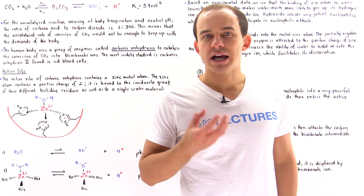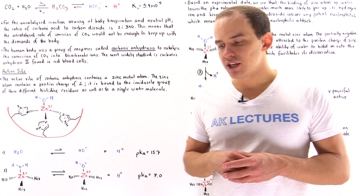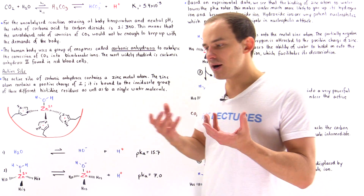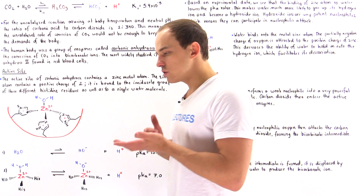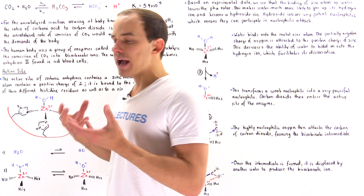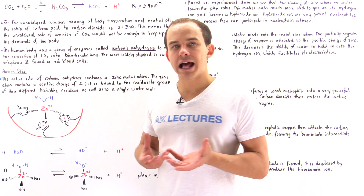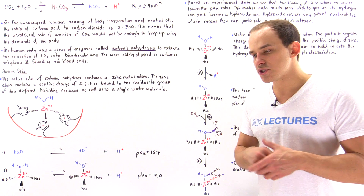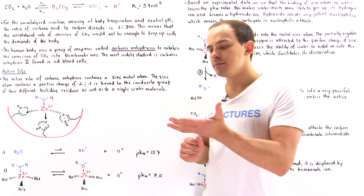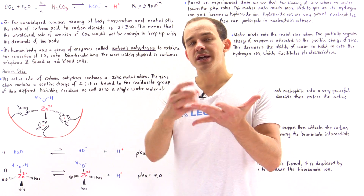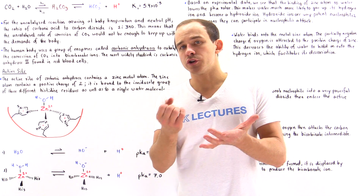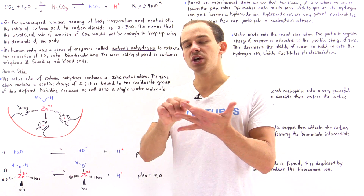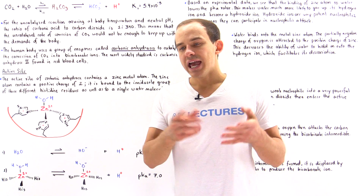Anytime we ingest macromolecules — for instance proteins, carbohydrates, or lipids — we have to break these macromolecules down into their individual forms. So we break them down into the amino acids, the individual sugar monomers, glucose molecules, and into fatty acids.